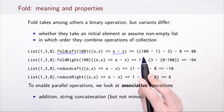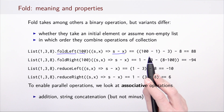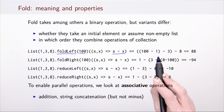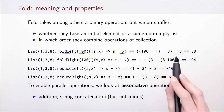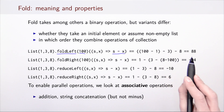We compute 100 — the initial element — minus the first element, then that entire result minus the second element, and so on until the end of the list. In this case the result is 88.